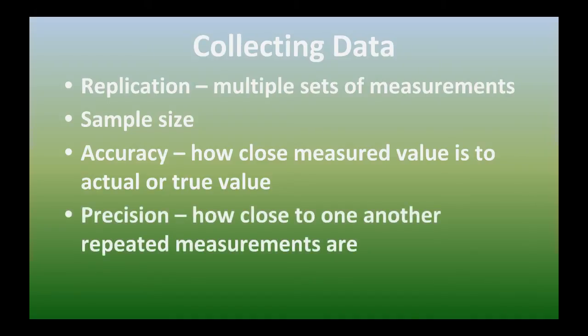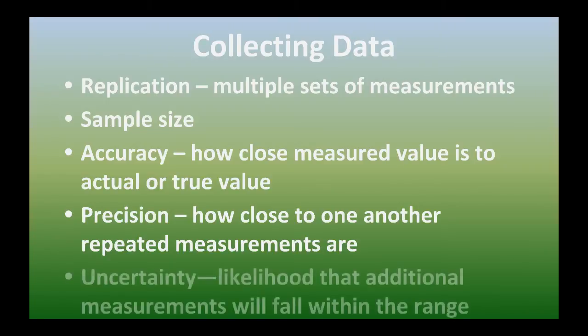which refers to how close a measured value is to its true value, and then even precision, how close we get repeated measurements, how if we do the measurement or the experiment more often, do we keep getting the same results. And finally, there's this likelihood that some measurements may change with the range, even though throughout all the other experiments that were made.